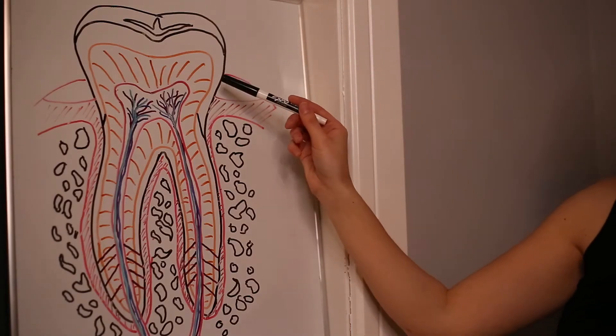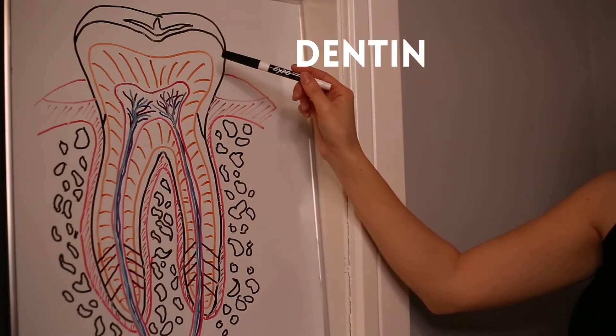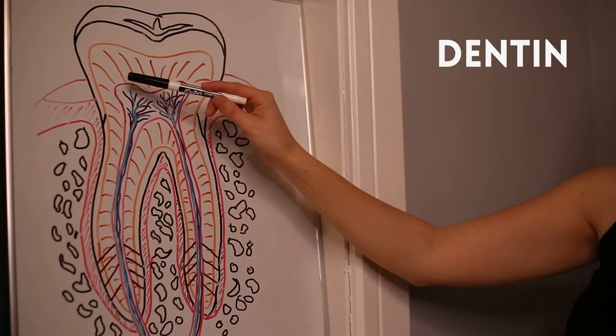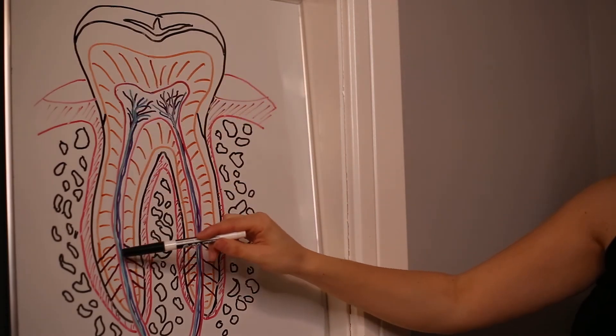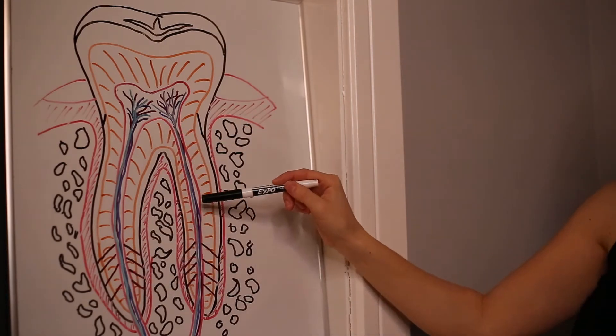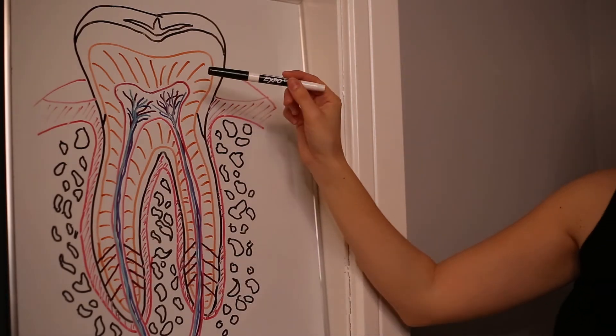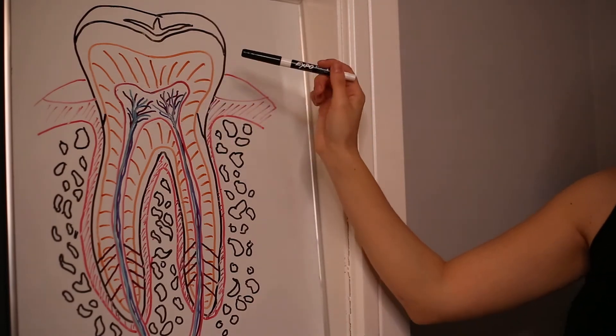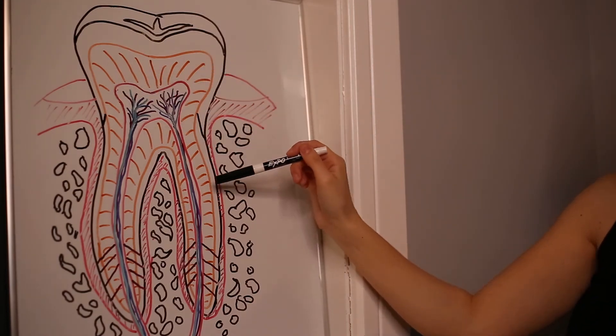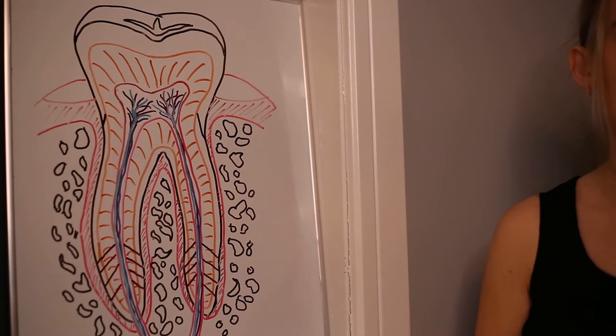Moving inwards, we have the next layer which is something called the dentin. Now the dentin actually encompasses, I don't know if you can tell, but it's this orange color on this picture and it goes all the way down and encompasses the roots and the crown. So unlike the enamel which just is on the clinical crown at the top, the dentin goes all the way down into the root structure as well.